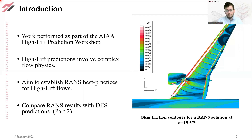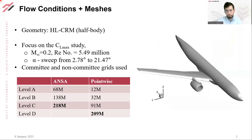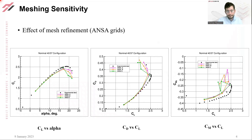To support our conclusions, higher fidelity DES simulations are also performed, which will be presented in the second part of this video series. The geometry under consideration is the publicly available half-body high-lift common research model. In the current work, we focus on the CLmax study, which involves an alpha sweep from lower angles of attack in the linear region of the lift curve through to CLmax and into the stall region. For our CFD simulations, we use the family of ANSYS grids generated by Beta CAE and a family of committee-generated point-wise grids, available on the high-lift prediction workshop website. We begin by examining RANS modeling sensitivities, looking at the effect of mesh refinement for the family of ANSYS grids.